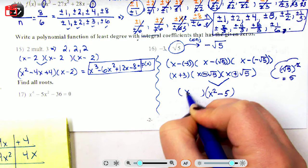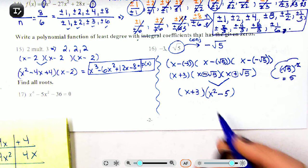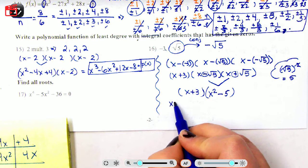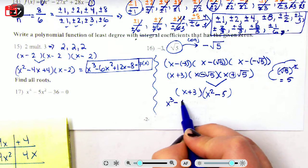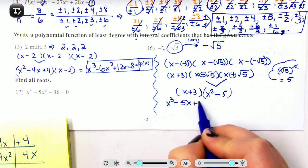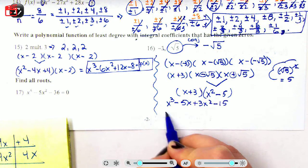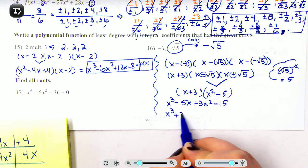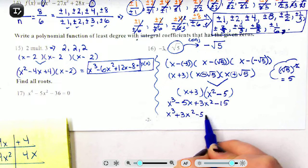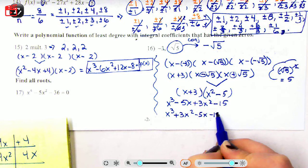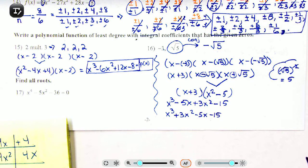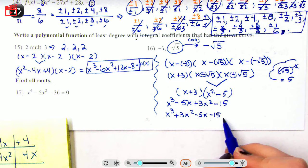Now we're going to take this and multiply it by our (x + 3). I'm just going to FOIL it, so I have x³ - 5x + 3x² - 15. So x³ + 3x² - 5x - 15 as my answer for number 16.